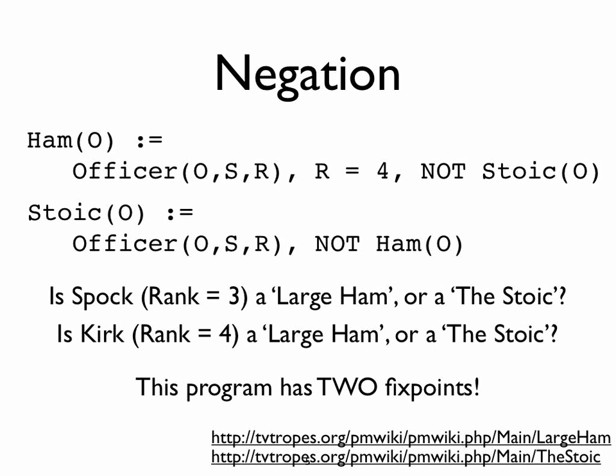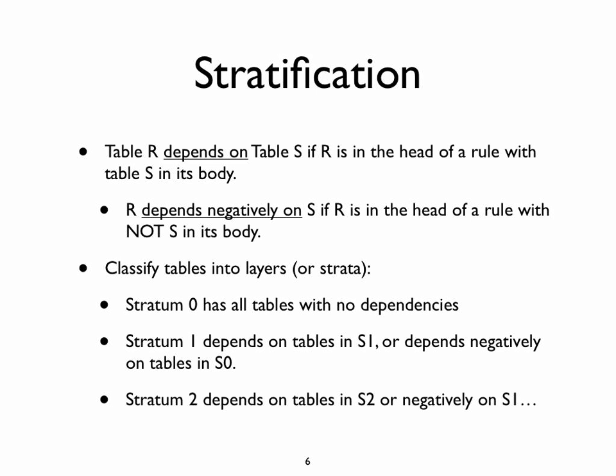We want to avoid this situation — we want to make sure the datalog program is structured so that kind of cycle can never happen. The trivial way would be to simply eliminate recursion, but we don't want that because the entire point is to have recursion. Negation is the other problem, so we could just get rid of negation, but that unnecessarily reduces the power of datalog. One particular strategy for dealing with negation is something called stratification.